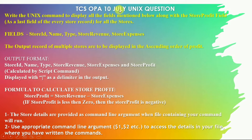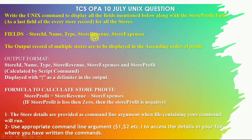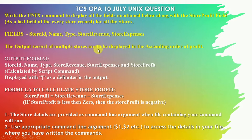In this video we are going to discuss a TCS OPA 10th July Unix question with its solution, and we will also discuss some basic concepts needed for this question. The question says: write the Unix command to display all the fields mentioned, along with the store profit field. We need to calculate this field and append it as the last field of every store record, for all stores. The output records are to be displayed in ascending order of profit.